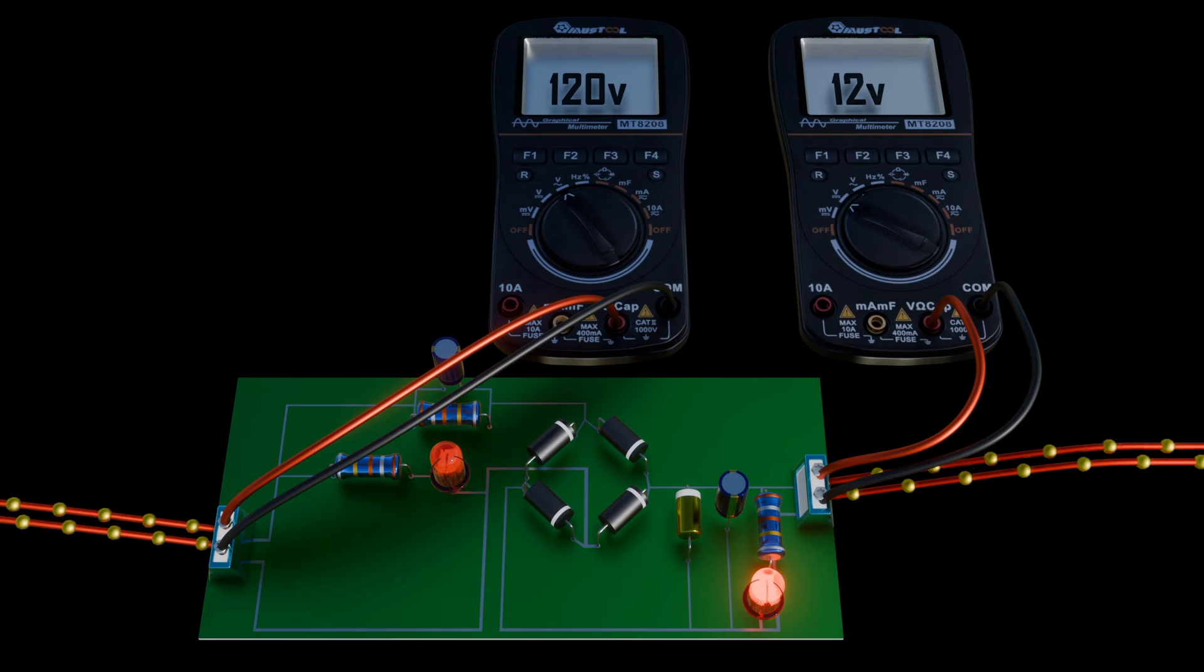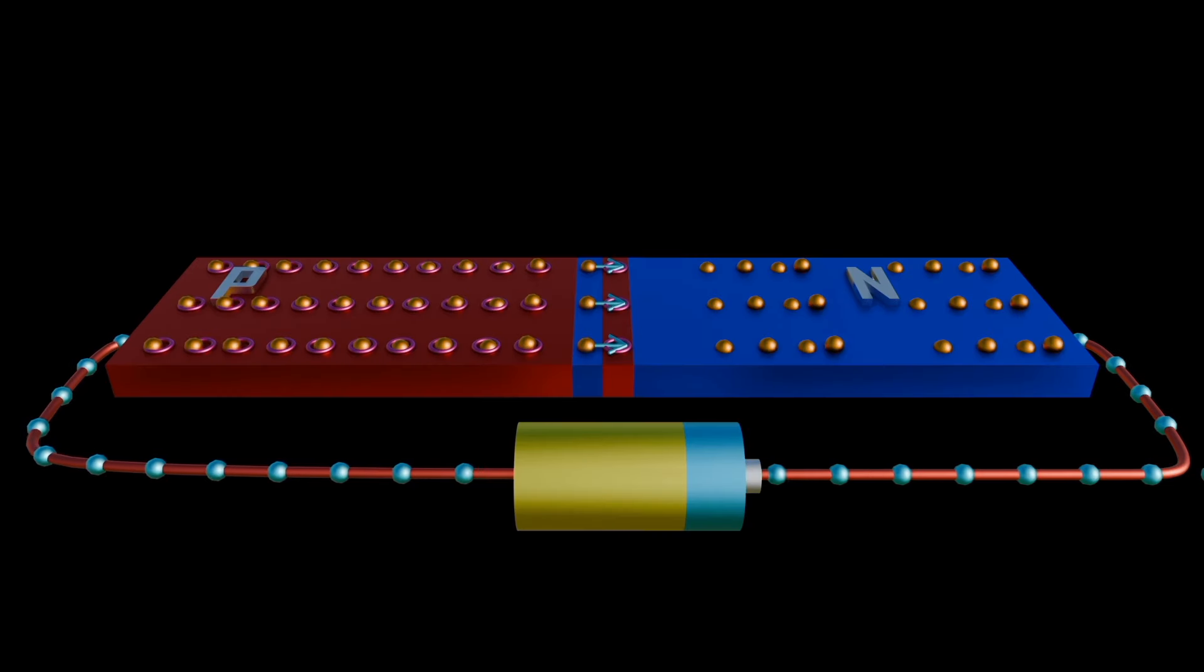This voltage regulator can be used to produce a very stable voltage output with very low ripple under varying load. By the help of Zener diode, we can easily stabilize the output voltage of the load.